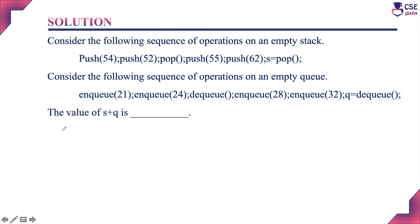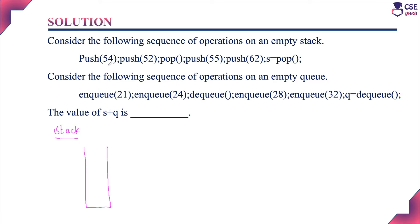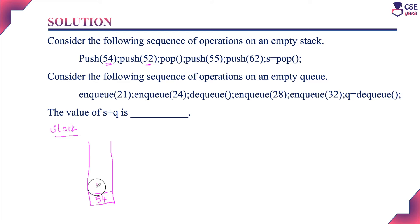The solution: first we consider the stack operations. Stack is last in first out — the element pushed last will be removed first. The first operation is push 54, so 54 is pushed into the stack. Next is push 52, so 52 is pushed. Now the top element is 52.